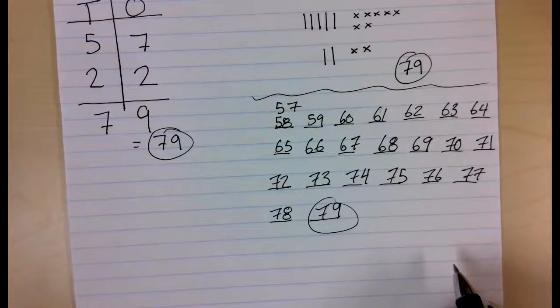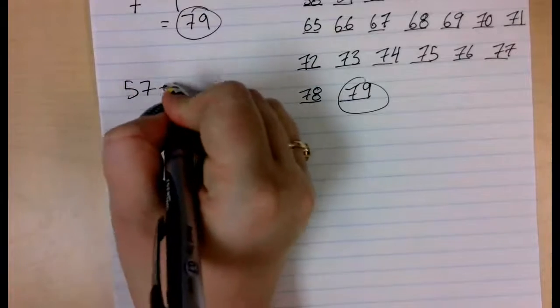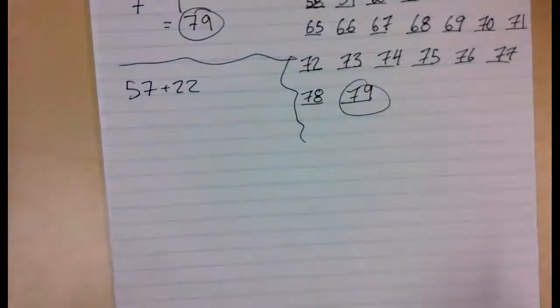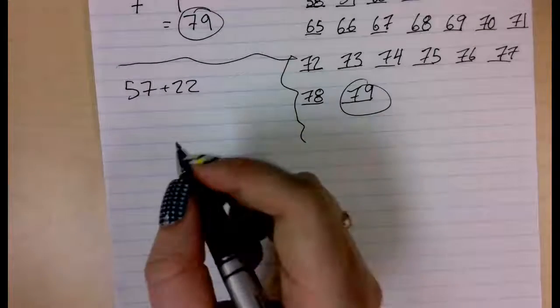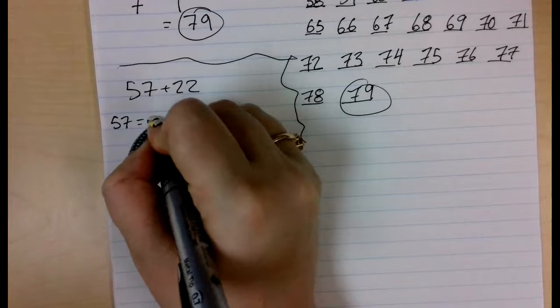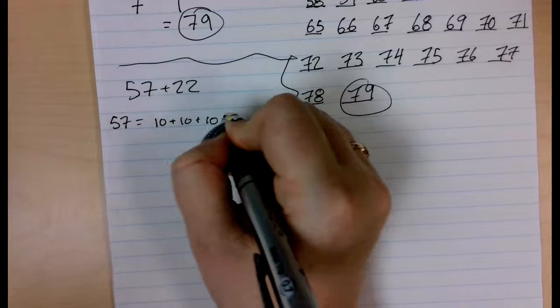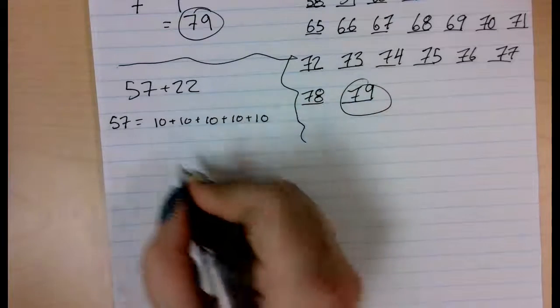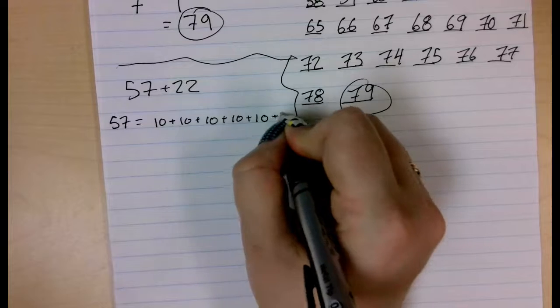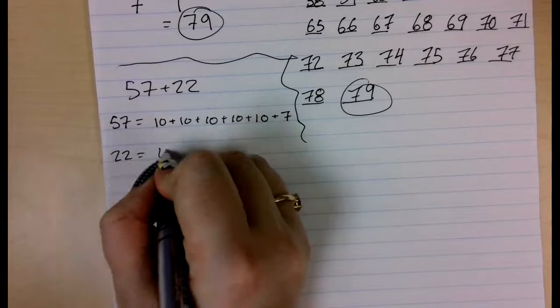Alright, let's jump into those friendly numbers. Again, we are doing 57 plus 22. So, I am going to break 57 into 5 tens. I am going to show you two different ways to do this. And a 7. I am going to break my 22 into 2 tens and a 2.